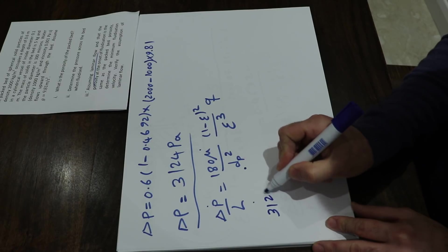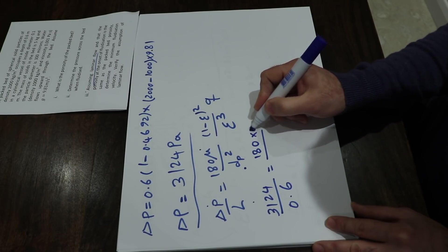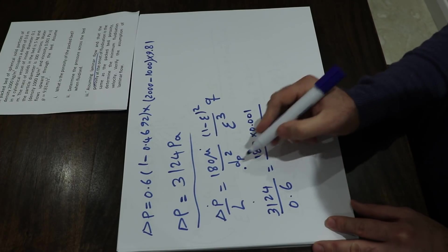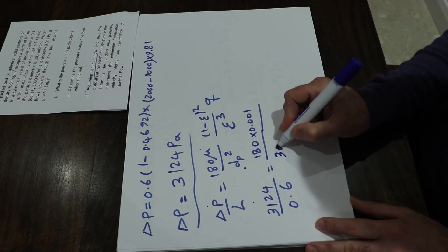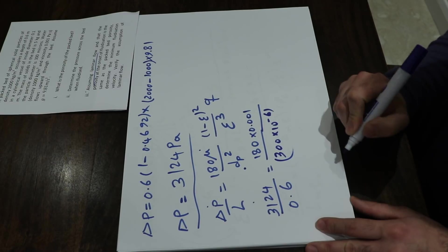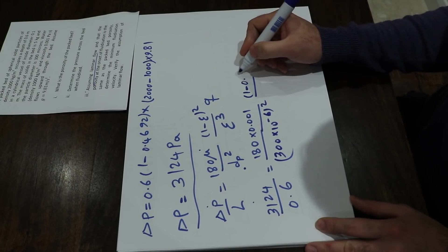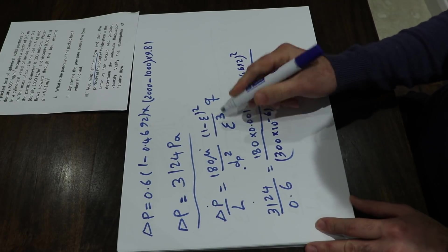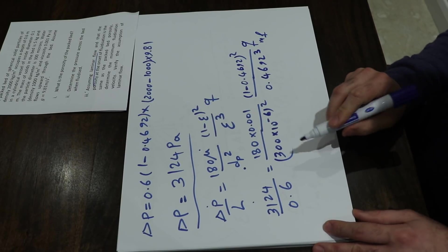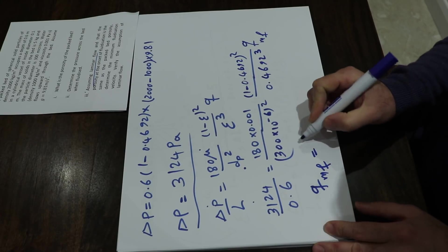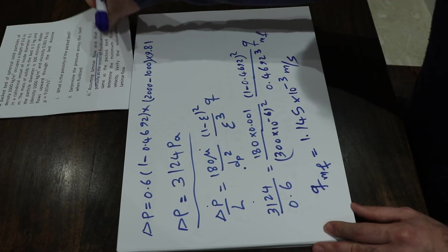All parameters are known. Plugging in: 3124 / 0.6 = 180 × 10⁻³ / (300×10⁻⁶)² × (1 − 0.4692)² / (0.4692)³ × u_mf. Solving for the minimum fluidization velocity gives u_mf = 1.145 × 10⁻³ m/s.